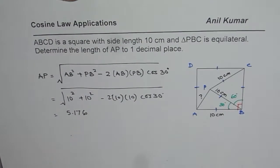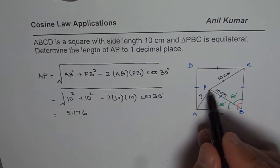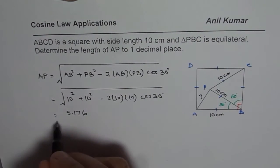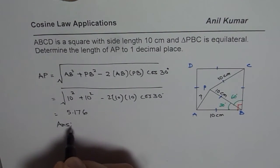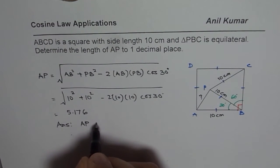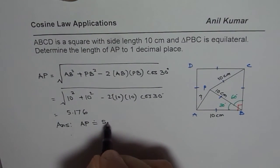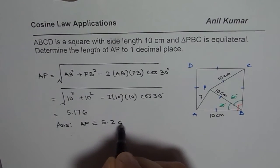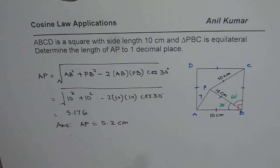And so we can write down the answer. Answer is AP is equal to approximately 5.2 centimeters. So 1 decimal place. Round it to 1 decimal place and write down your answer.